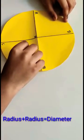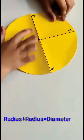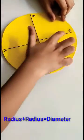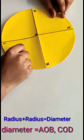Radius plus radius equals diameter. AOB is a diameter. COD is also a diameter. Thank you.